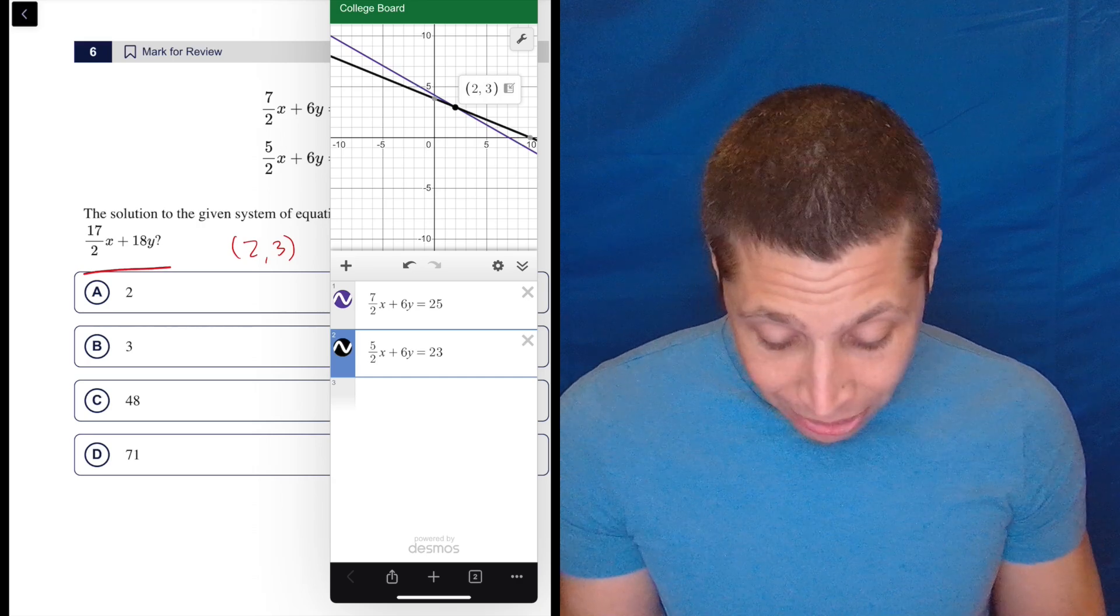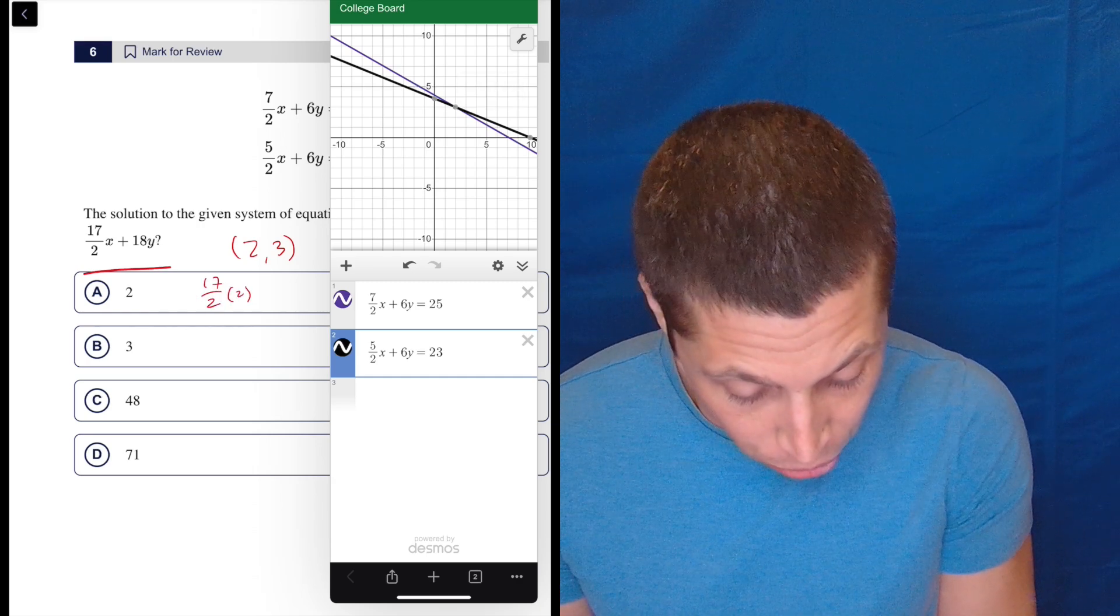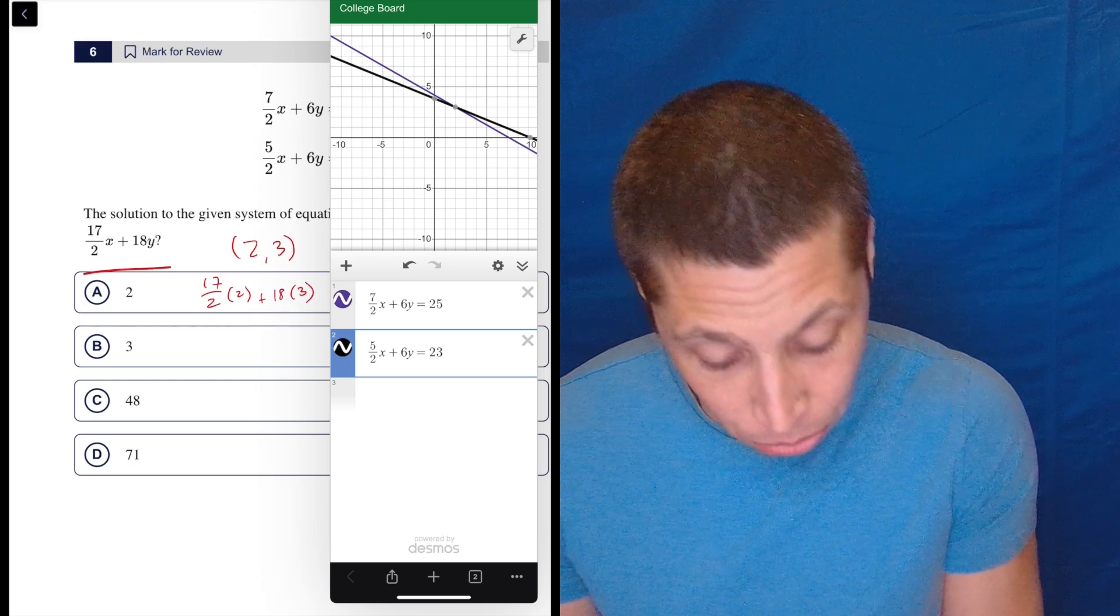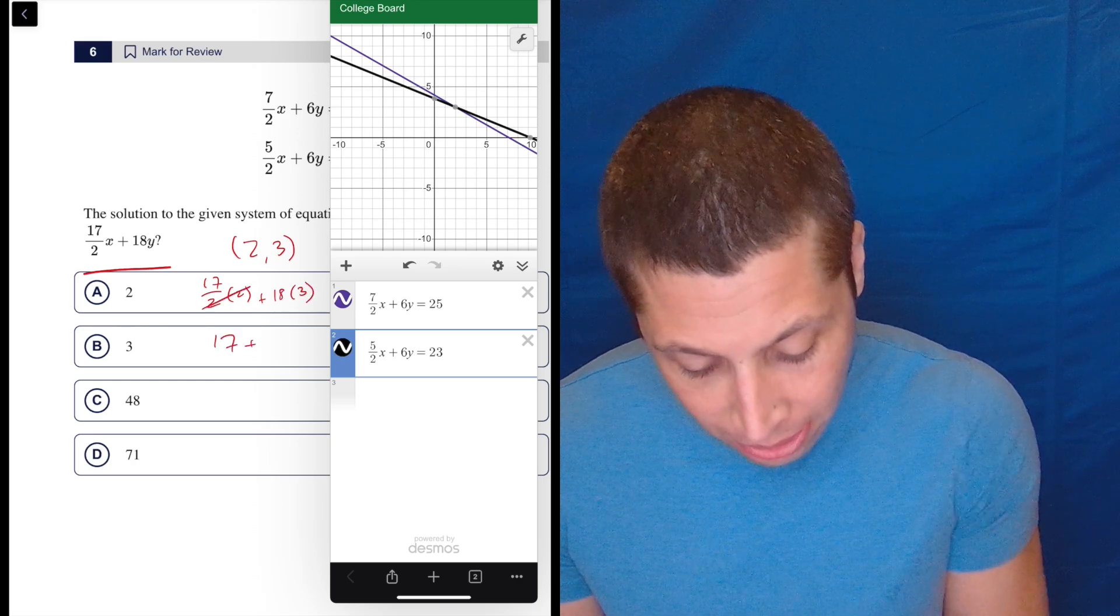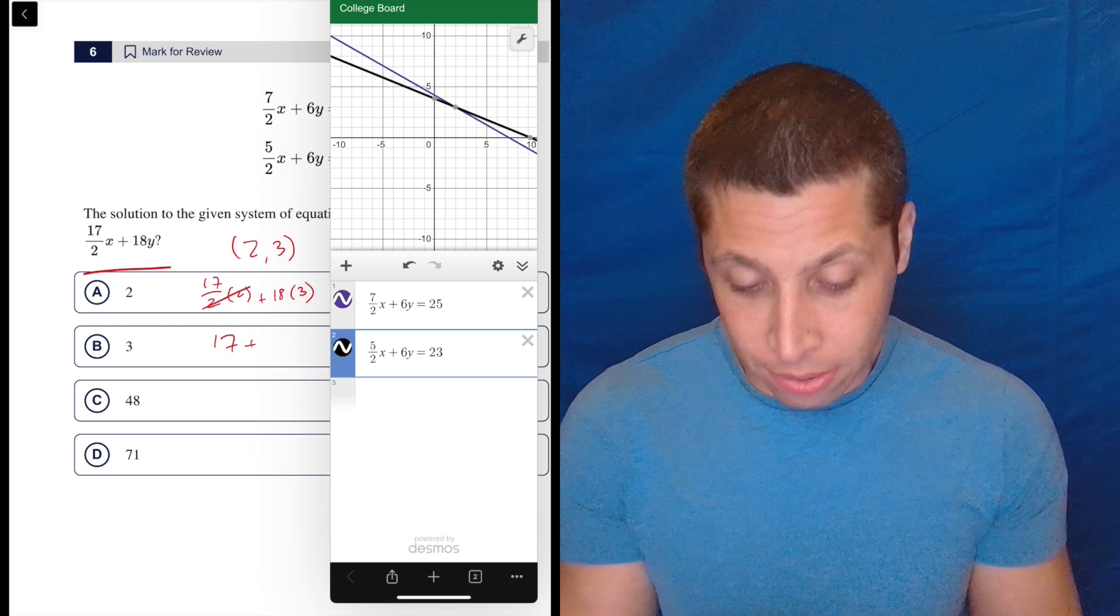So a bunch of ways to do it. I mean, you could just do it manually, I guess, at this point. It's not hard, right? 17 halves times 2 plus 18 times 3. The 2s cancel. That's 17, 18 times 3. I hate typing on the iPad, but 18 times 3 is 54.